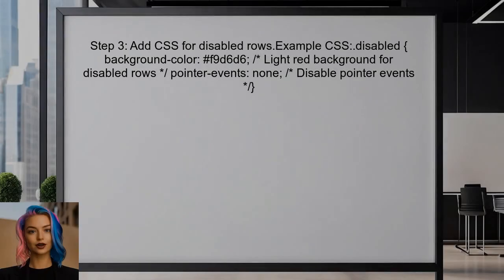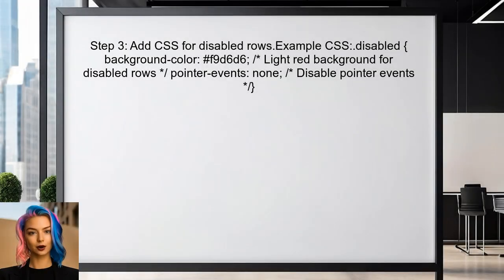After that, add some CSS to visually indicate which rows are disabled. This will help users understand that they cannot select those rows.